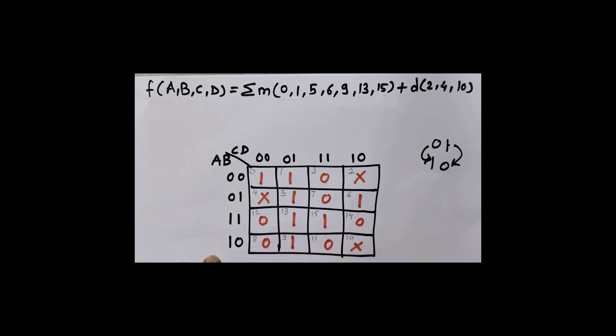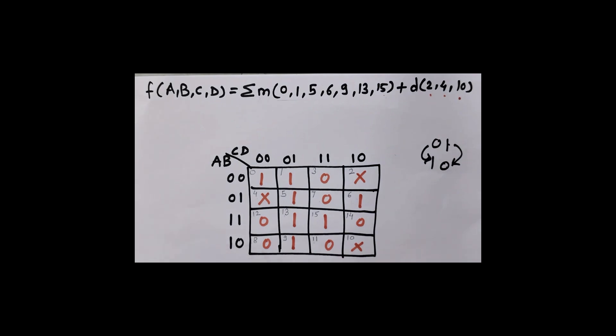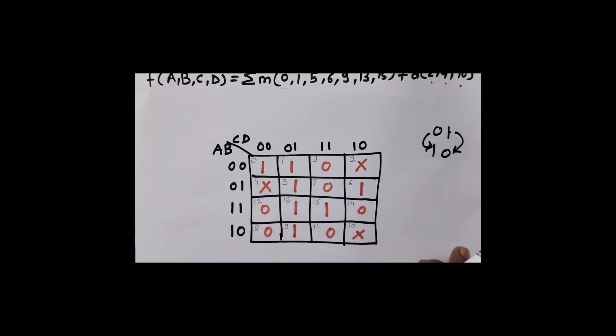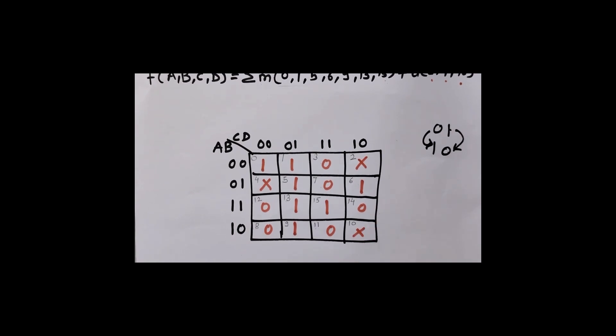We are going to write equation in sum of product form, so we will make pairs or groups of 1s. See, don't care means for these terms it is designer's choice to consider input as 1 or 0. Wherever required we will consider it as 1. If we don't need it, we will consider it as 0. But while making groups it is important to make groups of 1s. It is not important to group all don't cares.